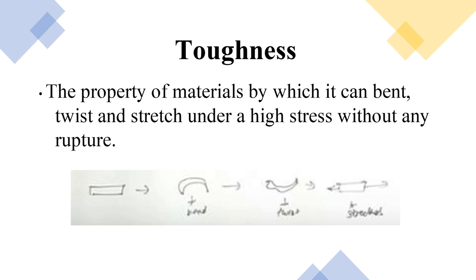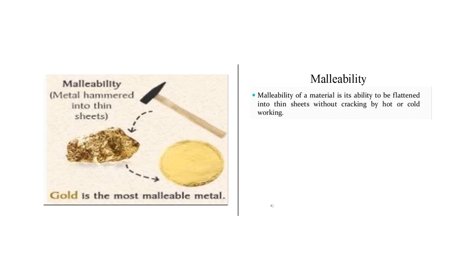Next is toughness — the property of a material by which it can bend, twist, or stretch under high stress without any rupture. As shown in figures, a tough block can be bent and twisted without breakdown or rupture.